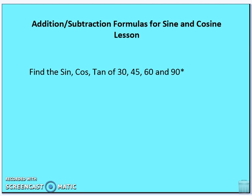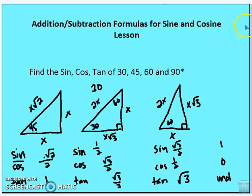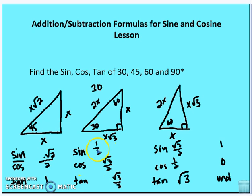For the 45-45-90 triangle, sine and cosine of 45° are both √2/2. For the 30-60-90 triangle: sine of 30° is 1/2, cosine of 30° is √3/2, and tangent of 30° is √3/3.